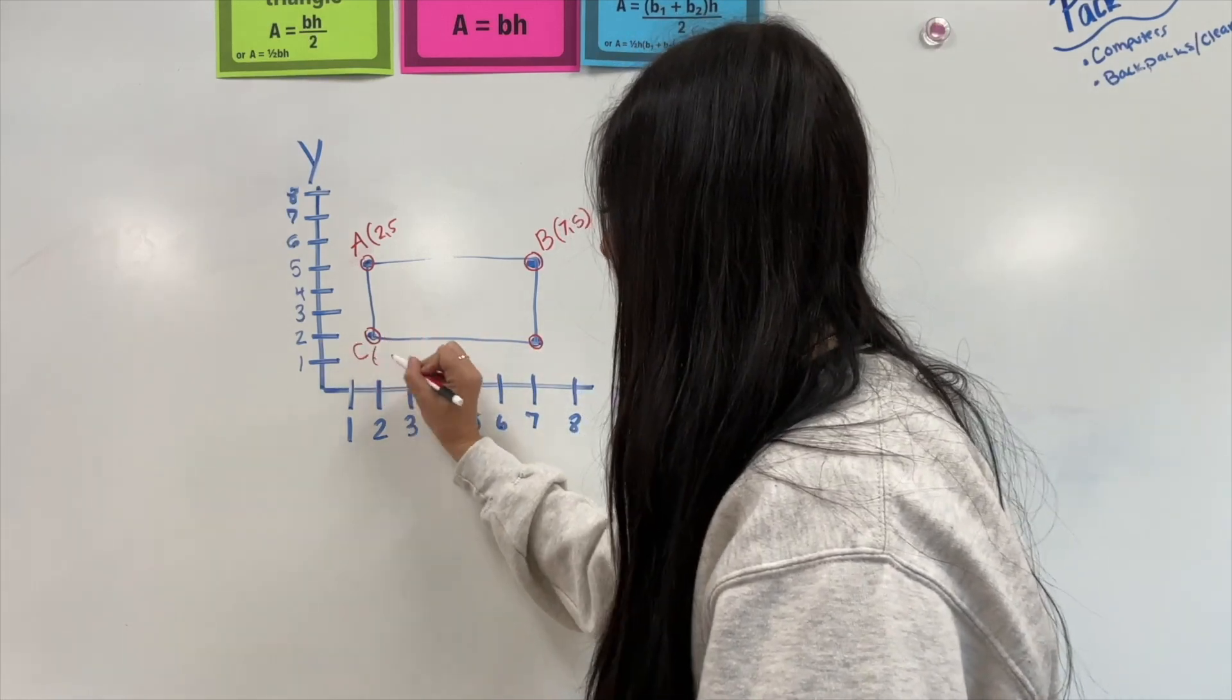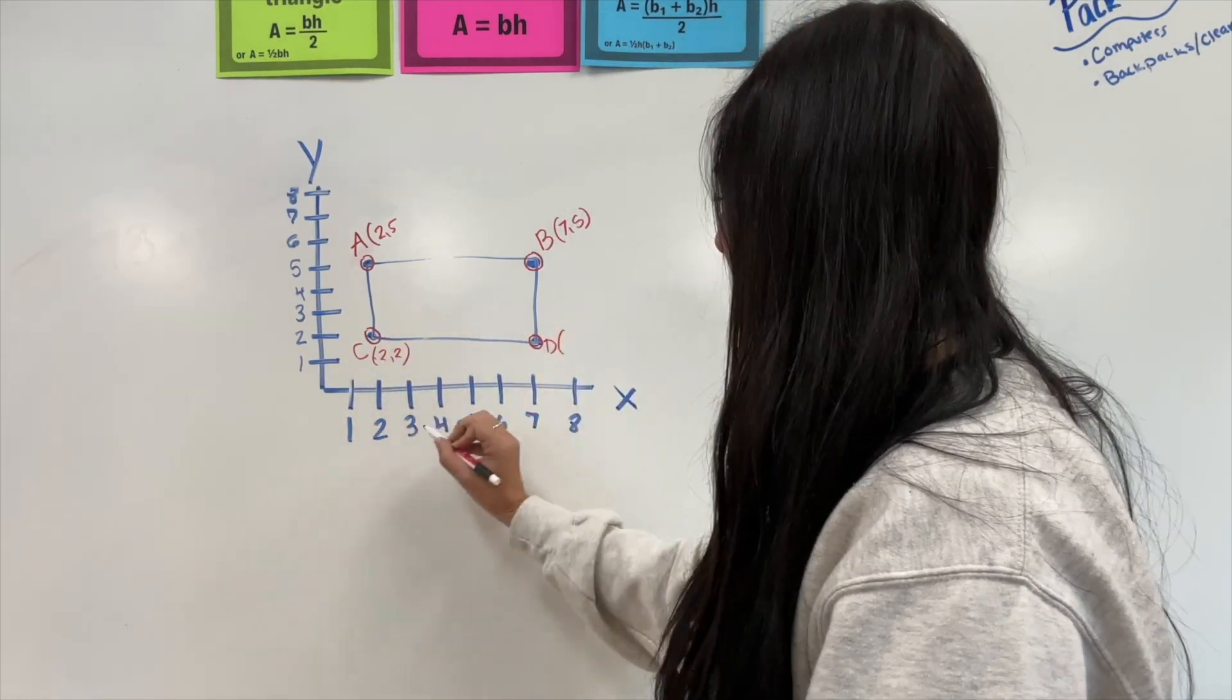C is going to be coordinates 2, 2. And D is going to be coordinates 7, 2.